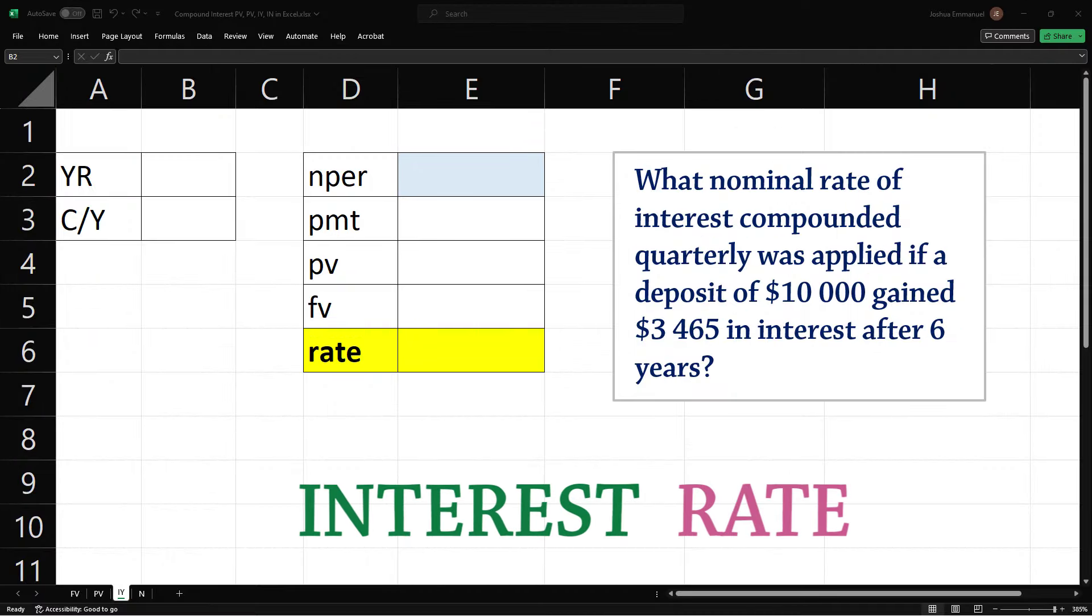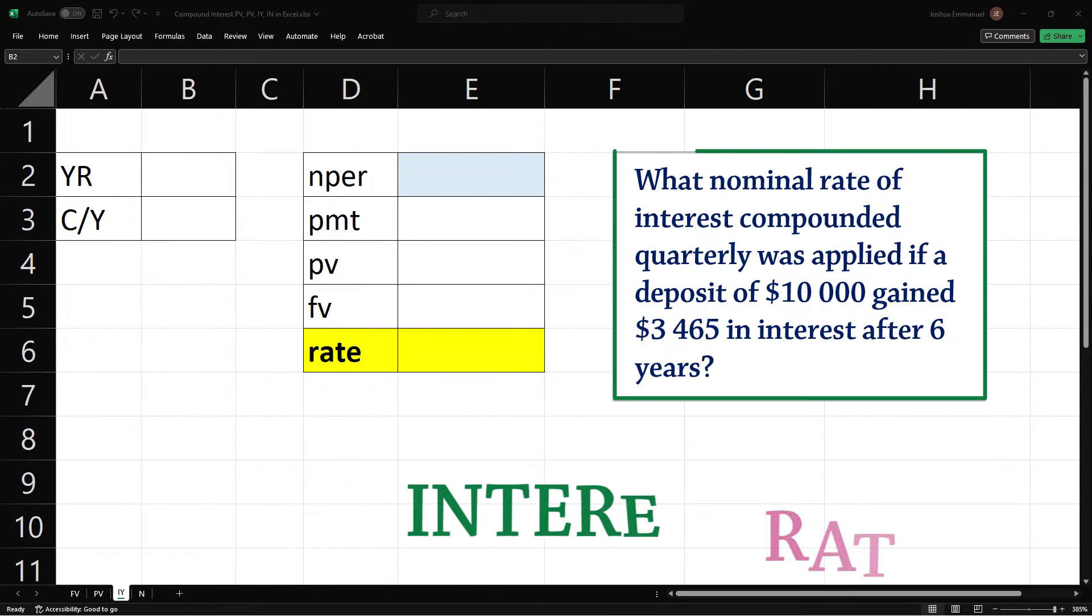Next, we compute the rate of interest. In this question, we want to calculate the nominal interest rate compounded quarterly if $10,000 gained $3,465 in interest after 6 years.